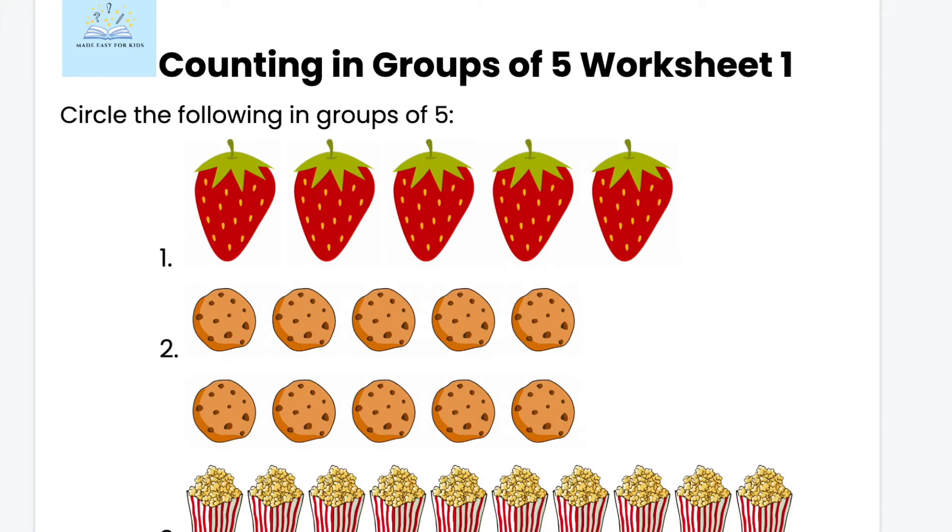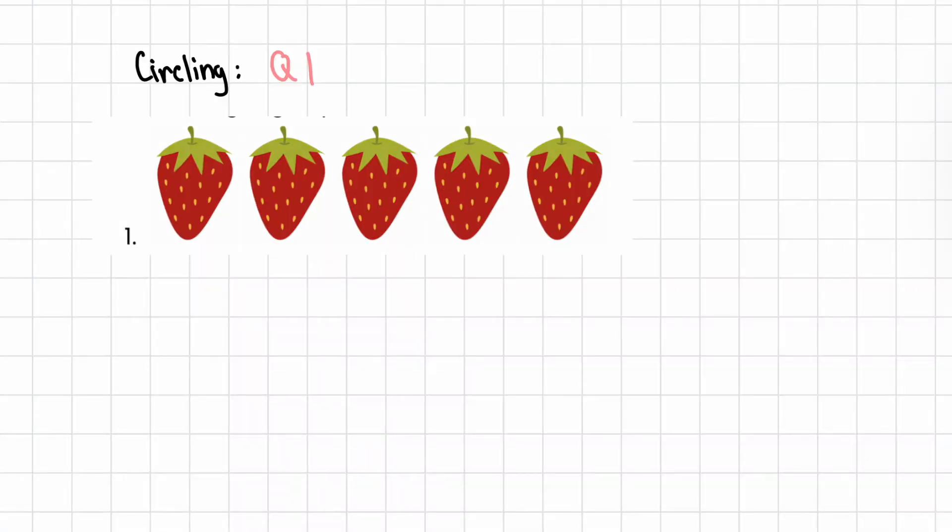Let's start with the first part. The worksheet tells us to circle the items in groups of five. Starting with the first question, let's count the number of strawberries in sets of five. Together.